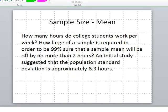This is when we're trying to estimate a mean, and we look for the sample size. How large of a sample is required tells me we're looking for the sample size, not the estimate. We want the mean to be off by no more than 2 hours. That's the margin of error. We also need an estimate of the standard deviation, and an initial study showed that that was approximately 8.3 hours. Finally, you do need to know the level of confidence. This time, we're going to want to be pretty confident, 99%.